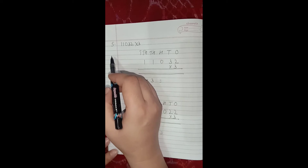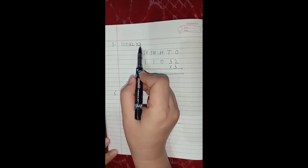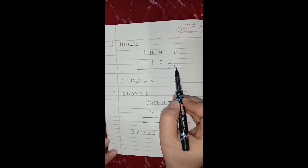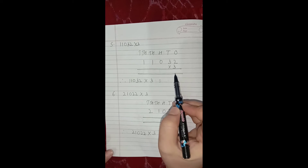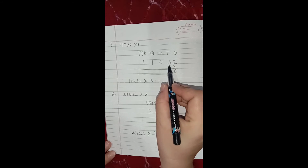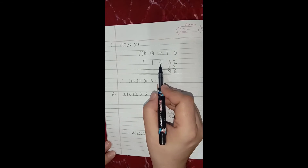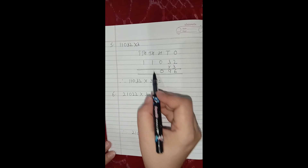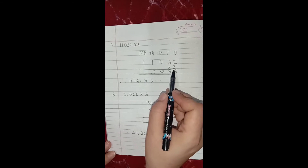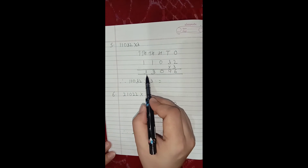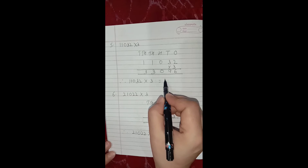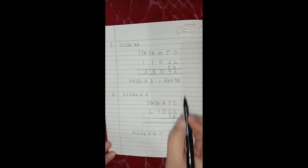Now let us do the fifth sum: 11,032 multiply by 3. Again first of all we will mention the places, then write the multiplicand and then the multiplier. Now let us find the product after multiplication. So let us multiply the ones: 3 2's are 6. Now tens: 3 3's are 9. Next is hundreds: 3 0's are 0. Next is thousands: 3 1's are 3. Now lastly 10,000: 3 1's are 3. So our answer is 33,096. Therefore 11,032 multiply by 3 is equals to 33,096.